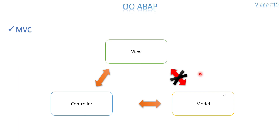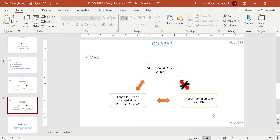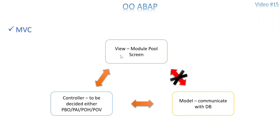One more slide that was missed: View is nothing but a model pool screen. The Controller decides which module to be called — if not object-oriented, you just call a module directly; if object-oriented, you need a method to call the particular PBO or PAI options. The Model communicates with your database. That's the simple idea of how to implement MVC. Just try and play around with your basic screens and keep yourself enhanced in MVC. These concepts are also coming under the design pattern area. See you in the next video!